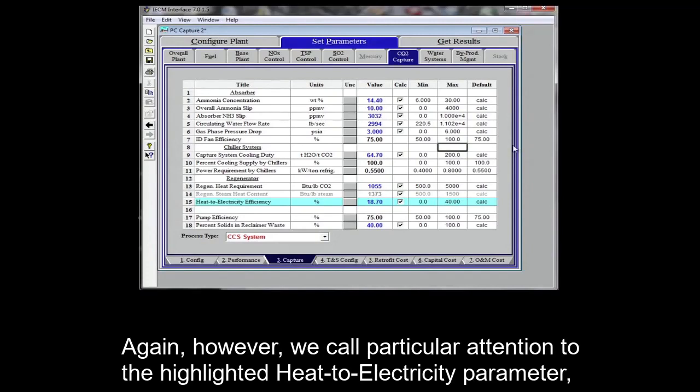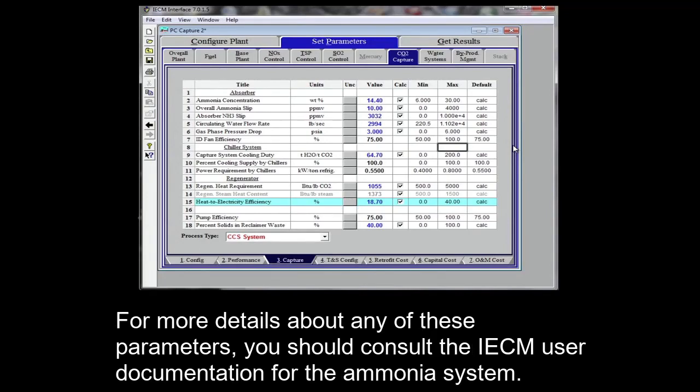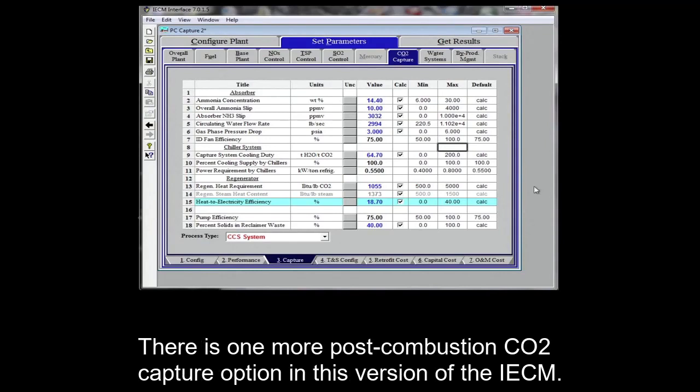Again, however, we call particular attention to the highlighted heat to electricity parameter, which plays a large role in the overall energy penalty for CO2 capture. For more details about any of these parameters, you should consult the IECM user documentation for the ammonia system. There is one more post-combustion CO2 capture option in this version of the IECM, so I'll now go back to the configure plant screen and select a membrane system.